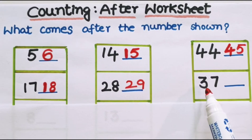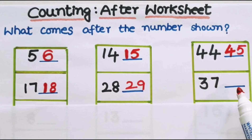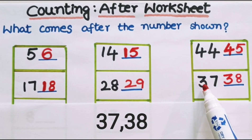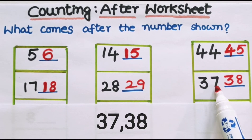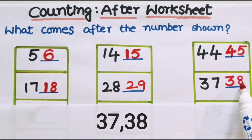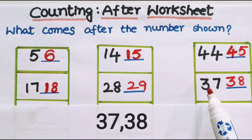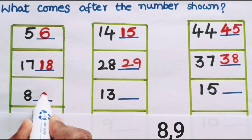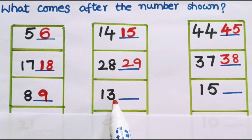What is the next number? It is 37. After 37, what number comes? Yes, it is 38. The tens place value is 3, so we write 3 in the tens place. In the ones place the number is 7, so after 7 we write 8. After 37, 38 comes. What is the next number? It is 8. What number comes after 8? After 8, 9 comes.